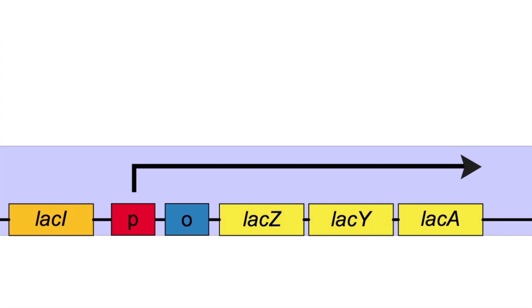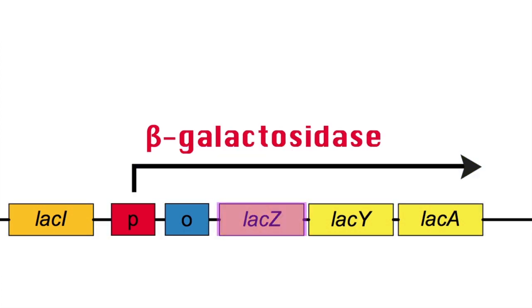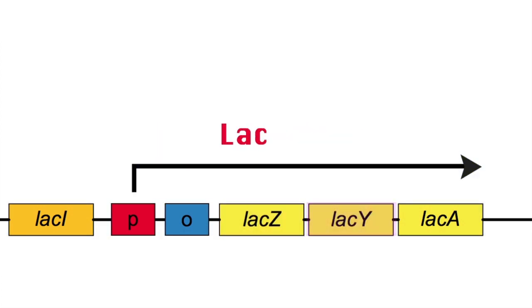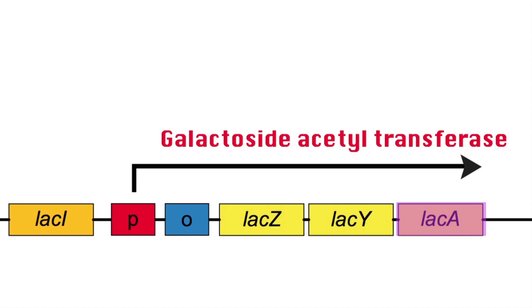The lac operon is composed of three genes. LacZ, which encodes the beta-galactosidase enzyme. LacY, lactose permease, an integral membrane protein that transports lactose across the membrane. And finally, lacA, galactoside acetyltransferase, that transfers acetyl groups from acetyl-CoA to the 6-hydroxyl of certain galactose pyranosides.